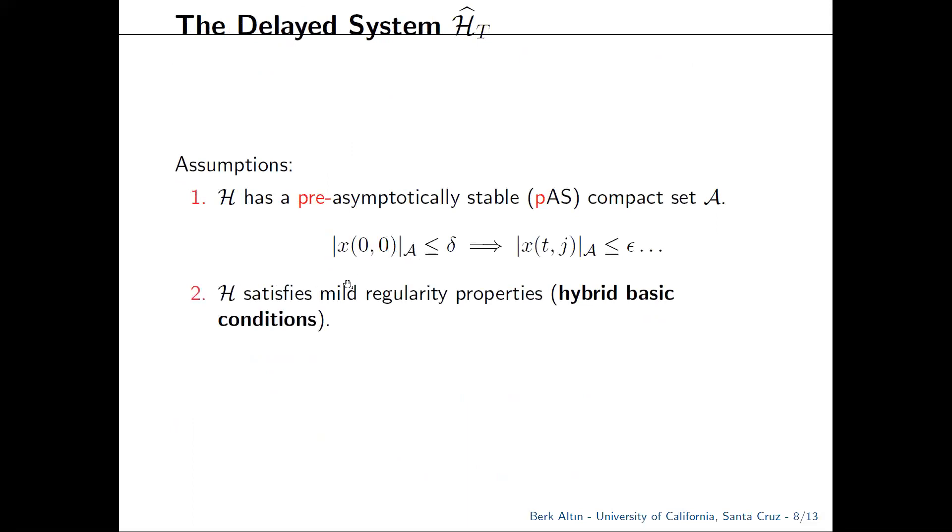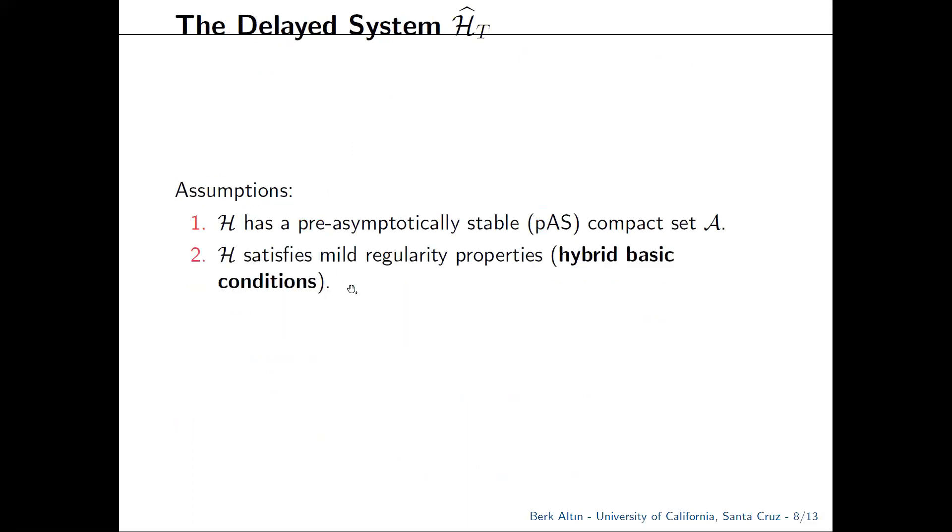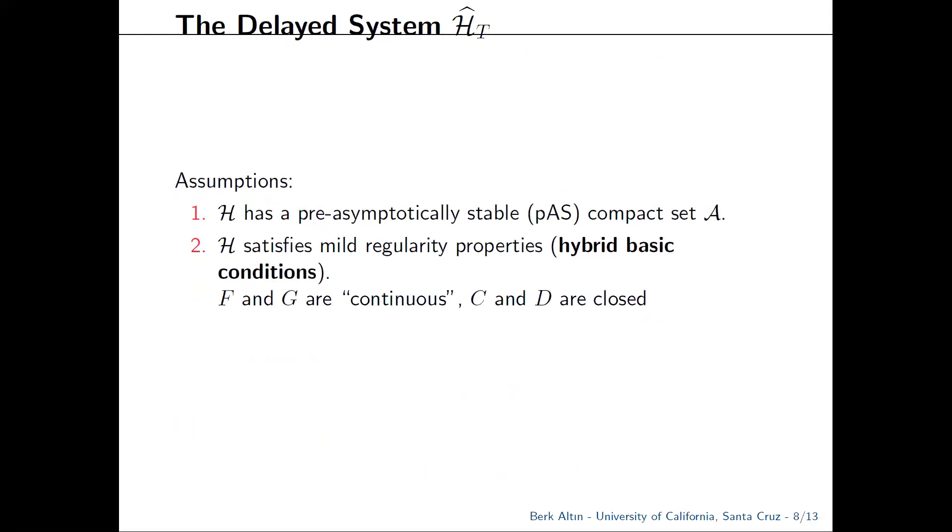Our second assumption is a set of mild regularity conditions which we call hybrid-basic conditions. These require the flow and jump sets to be closed, and the flow and jump maps to be outer semi-continuous and locally bounded, but this simplifies to continuity for the single-valued case.